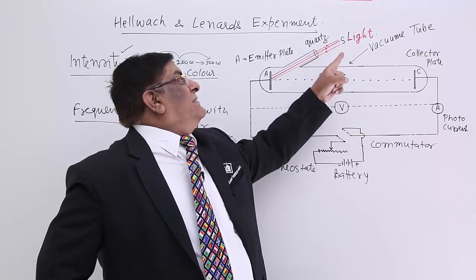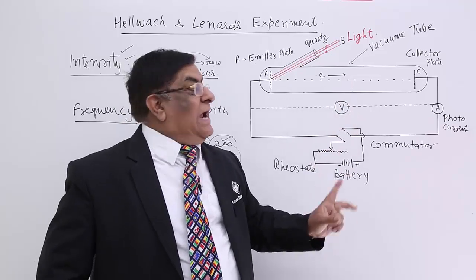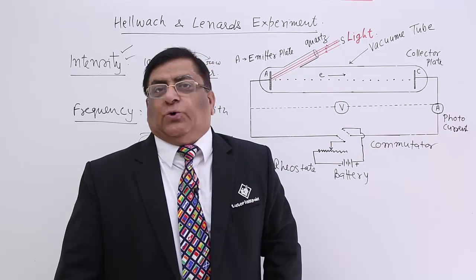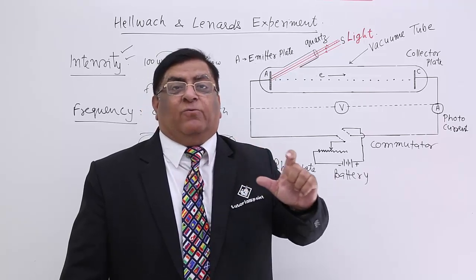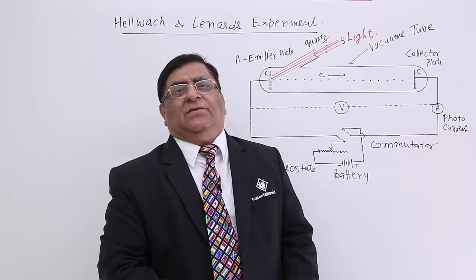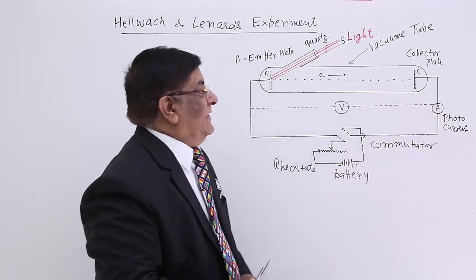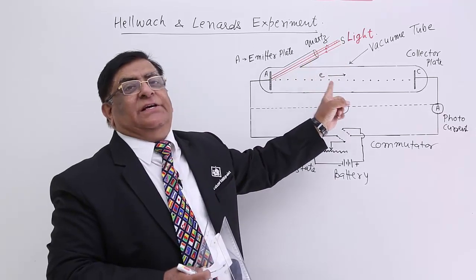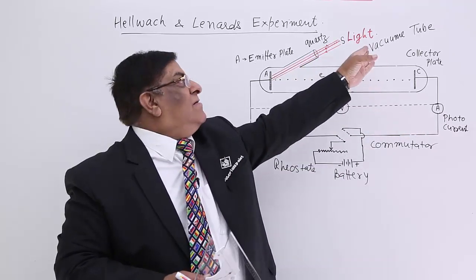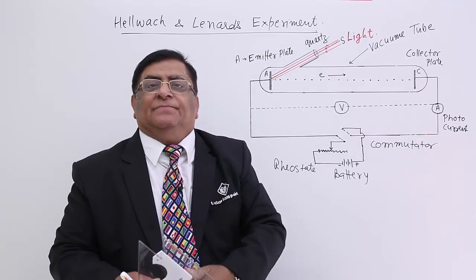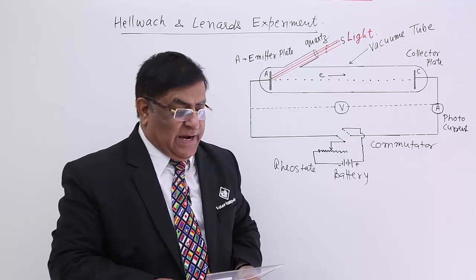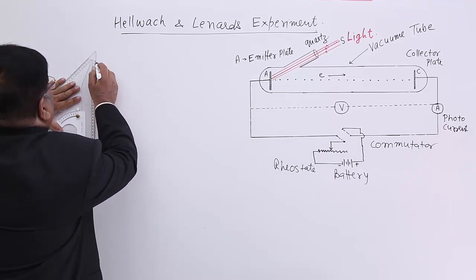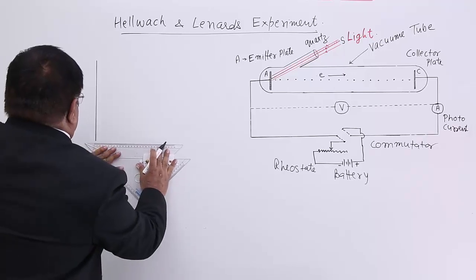Frequency of the light, intensity of the light, electric current, voltage, and when we reverse the voltage — many quantities are there and we have to relate all of them. So you must study it very patiently one by one. Now we see the relation between intensity and electric current. We draw a graph — photoelectric current versus intensity of light.